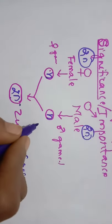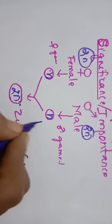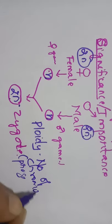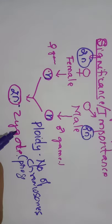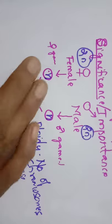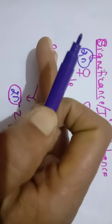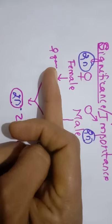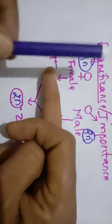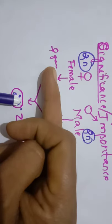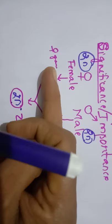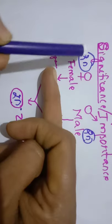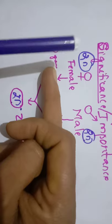Meiosis is very significant because it maintains ploidy. Ploidy means the number of chromosomes an organism carries — that number is maintained among generations. If meiosis is not there, in sexual reproduction when two sexes unite to form the zygote, 2n plus 2n would become 4n, meaning the progeny would have a different number of chromosomes compared to the parents. To maintain this, meiosis occurs.